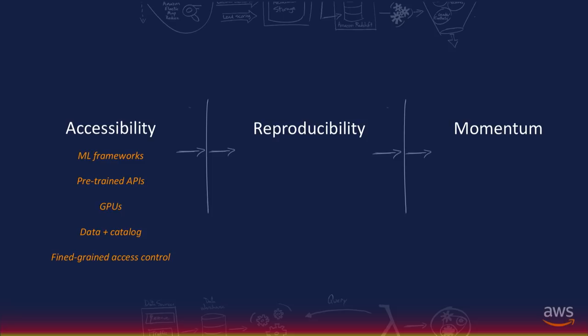That's where Jupyter Notebooks come into the picture for reproducibility. You want to make sure you have SDKs, libraries, and lots of examples available — parameterized templates that people can reuse to solve their problems. You also want to think about units of packaging: how do you package algorithms, infrastructure, and different profiles for the data scientist, data engineer, and AI researcher? And how do you package the data so people can use elements of your dataset to reproduce the problems you want them to solve?